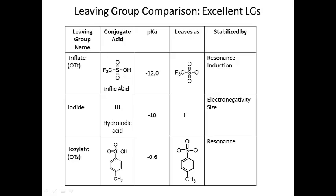Here are some examples of really excellent leaving groups. The triflate leaving group — the conjugate acid is triflic acid with a pKa of -12 — leaves as the triflate anion, stabilized by resonance as well as induction. Iodide: the conjugate acid is HI (hydroiodic acid), pKa -10, so iodine leaves as I⁻, stabilized by electronegativity and size. The tosylate leaving group also has a negative pKa, meaning it's a very strong acid with a very stable conjugate base — the tosylate anion is stabilized by resonance.